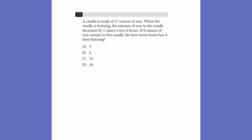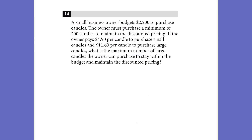So if six ounces of wax remain in the candle, how many hours has it been burning? We know we started with 17 ounces and have six left, so that's 11 ounces burned off. We know it burns 0.25 ounces per hour, so we can convert to hours with dimensional analysis. We want the ounces on one side and hours on the other. One ounce every four hours — once we cancel these out, it takes 44 hours, or answer D.